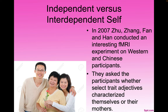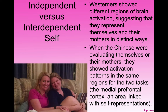In 2007, Zhu, Zhang, Fan, and Han conducted a functional MRI experiment on Western and Chinese participants. They asked participants whether select trait adjectives characterized themselves or their mothers. Westerners showed different regions of brain activation, suggesting they represent themselves and their mothers in a distinct way. But when Chinese participants were evaluating themselves or their mothers, they showed activation patterns in the same regions — the medial prefrontal cortex — meaning they thought of themselves as a continuation of their mother.